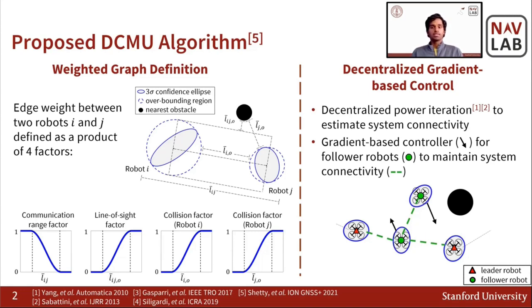Thus, given a system of leader and follower robots, the follower robots implement a controller to maintain connectivity in the system.